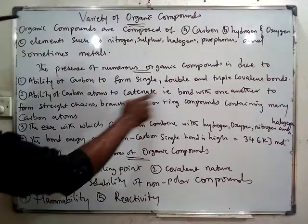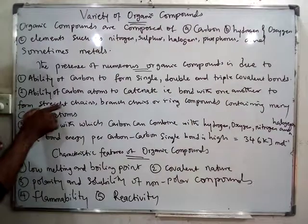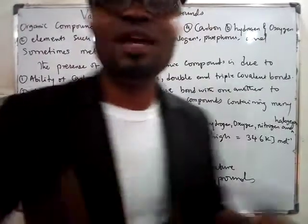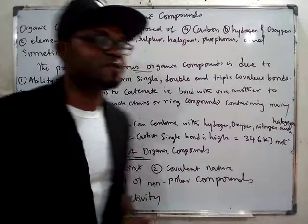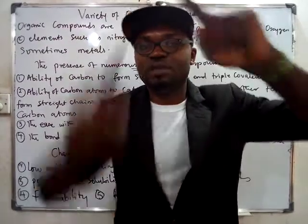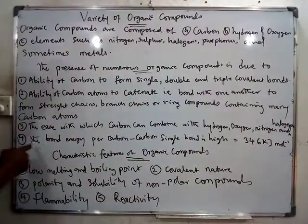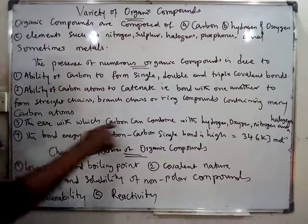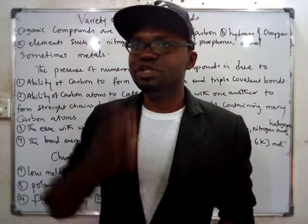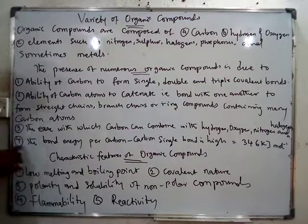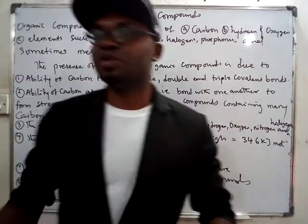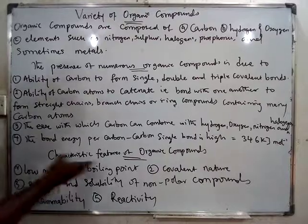Next, we have the ability of carbon atoms to catenate. Catenation simply means carbon combining with one another to form straight-chain, branching, and ring compounds containing many carbon atoms. Additionally, carbon combines easily with hydrogen, oxygen, nitrogen, and halogens. Also, the bond energy of the carbon-carbon single bond is high, making carbon-carbon bonds very stable.